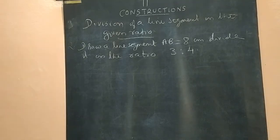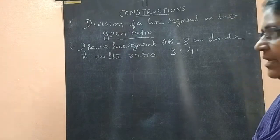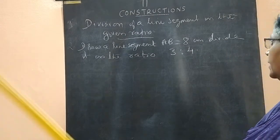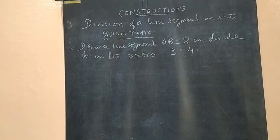Next question. Draw a line segment AB equal to 8 cm and divide it in the ratio 3 is to 4.